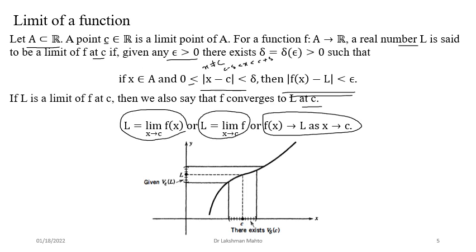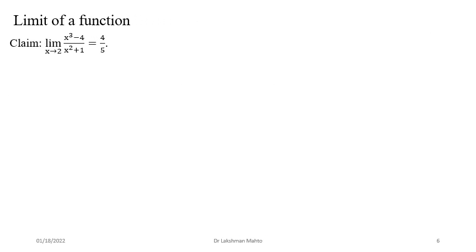Geometrically, always focus your journey from domain to range: if you take any point x from the delta neighborhood of c, then the corresponding f(x) would be in the epsilon neighborhood of l. This is the geometric visualization of the limit of a function - this is the epsilon-delta definition, which we generally call the epsilon-delta game. We will now discuss the sequential criteria.